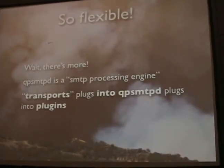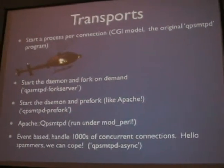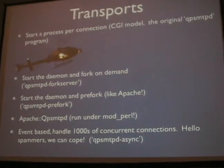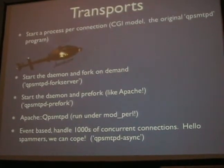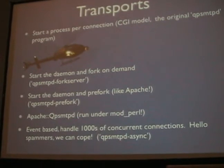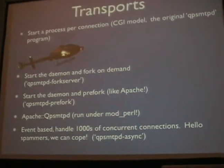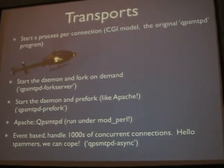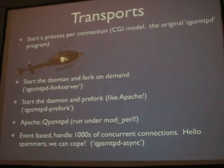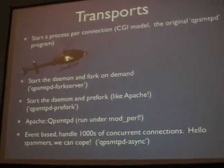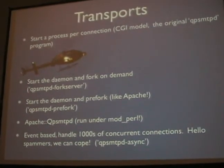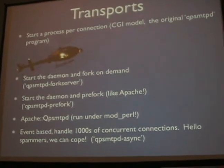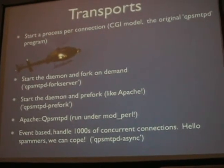So, transports. The very first transport — the default one when I first made it — was sort of like a CGI. You connect and it starts Perl and starts the whole thing, which was fine at the time, but then it got too slow. So someone made it a fork server, with one daemon running and forking another process on each connection. That was too slow too, so someone made a pre-forking one, sort of like Apache, so it forks some processes in advance. We also have a module for mod_perl — I think that's what they use at Apache to run it, so they can run their mail server on their Apache, which is sort of nice.